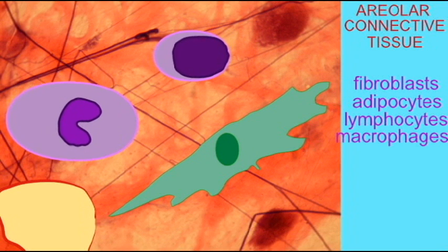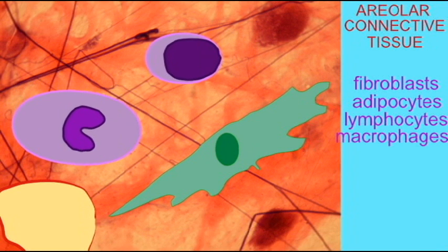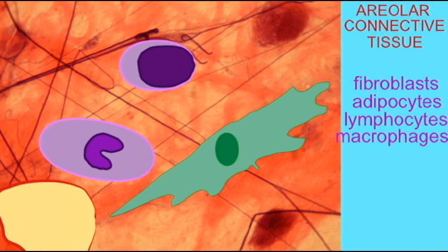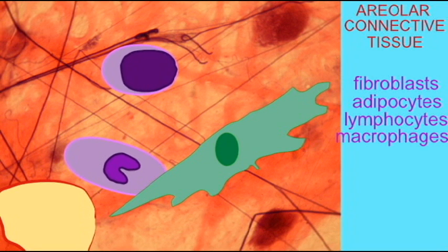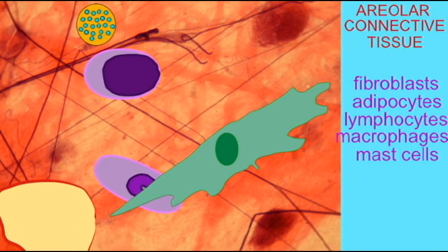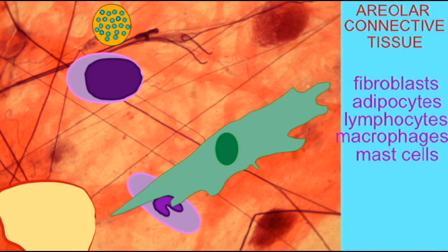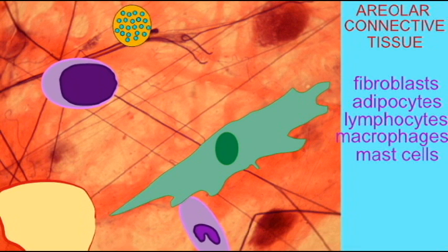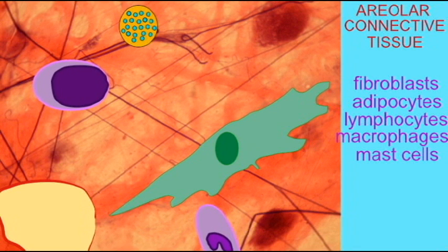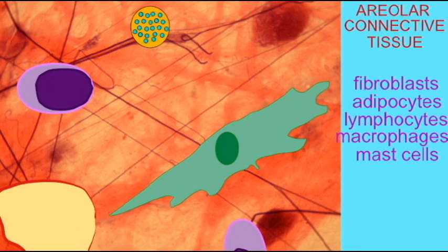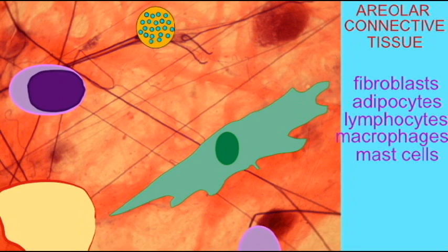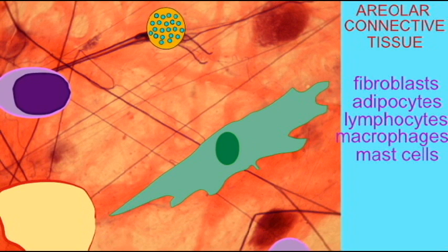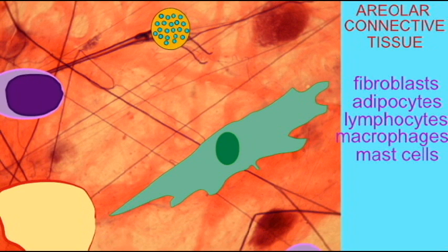So, for example, in this areolar connective tissue, one can find fibroblasts — cells which make collagen. One can find adipocytes, fat cells, which store triglycerides for energy. Lymphocytes, which perform an immune function. Macrophages, which perform a different immune function.